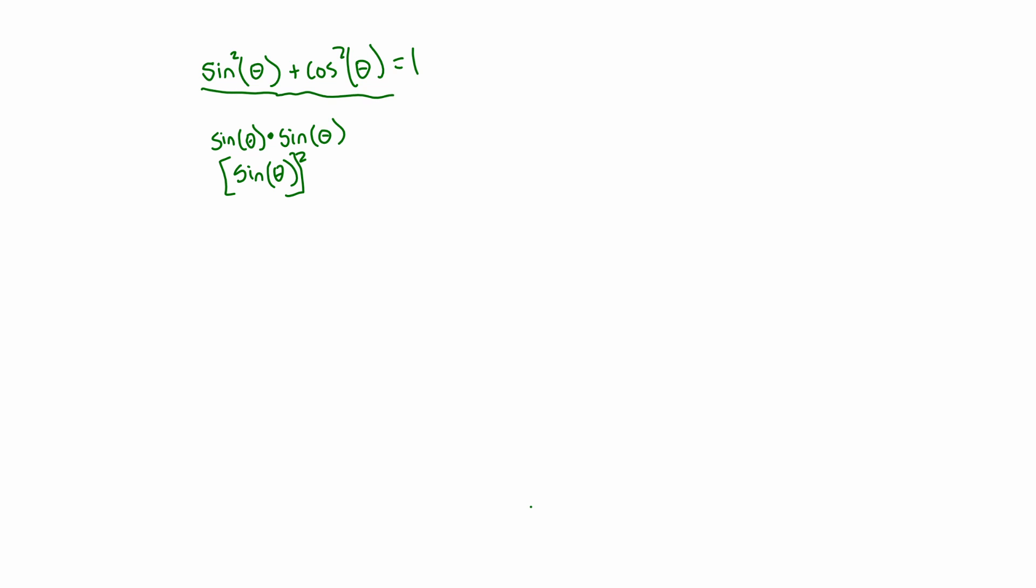So this is the Pythagorean identity itself. We want to prove that it's true. And we're going to prove it by looking at a right triangle. So let's say we have a right triangle here. Here's angle of theta. Opposite of angle of theta is, I'm going to say, side A. Adjacent to angle of theta is going to be side B. And then we're going to have H for the hypotenuse. So just by the definitions, sine of theta is going to be side A over hypotenuse. Cosine of theta is going to be side B over hypotenuse.